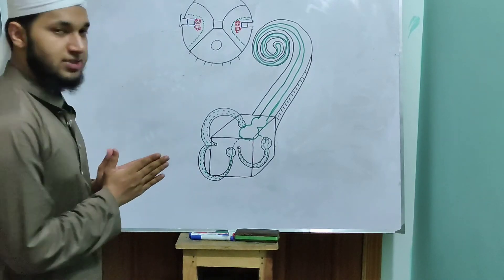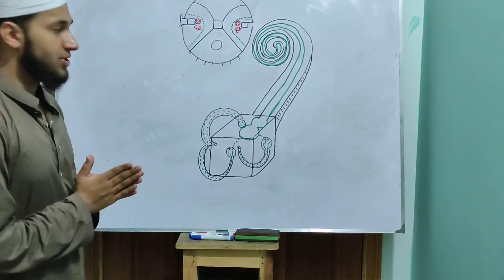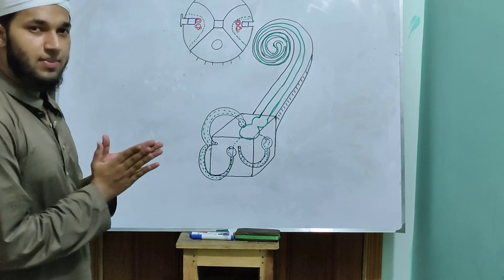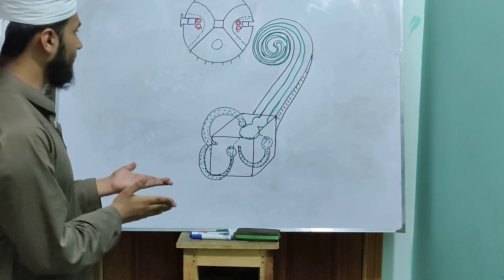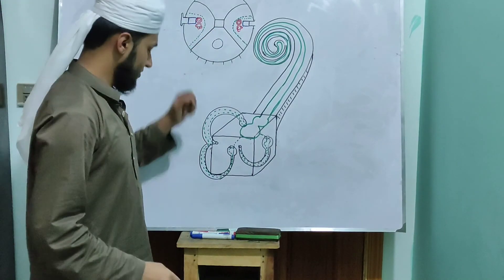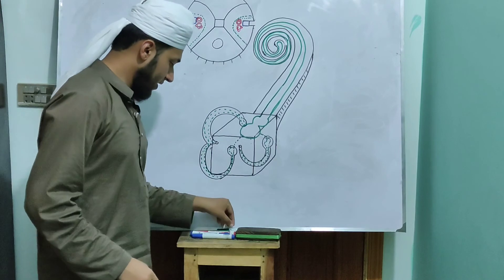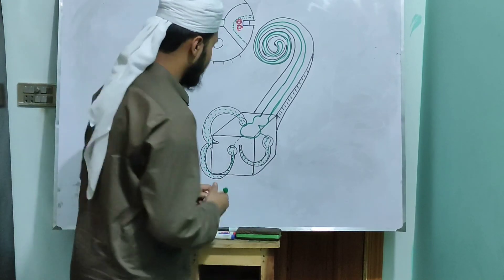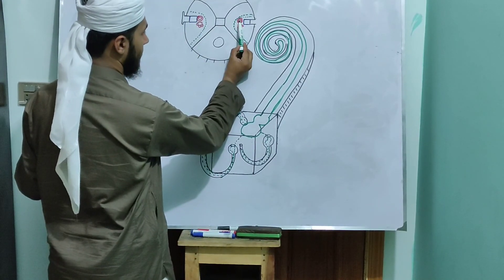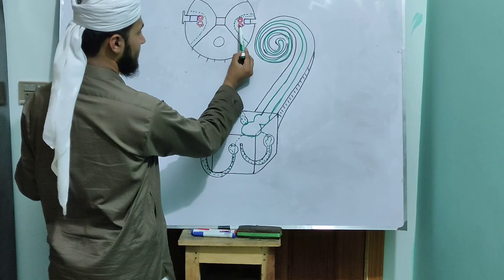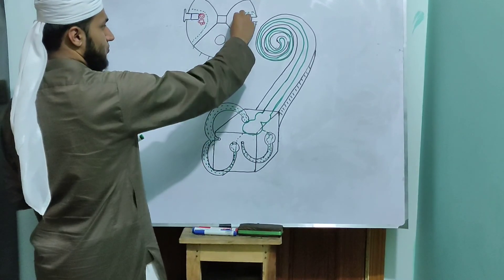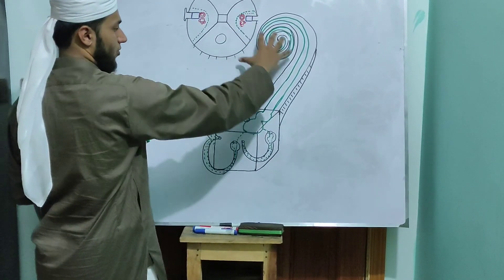After discussing the exact location of the internal ear, now we will discuss some more features about the internal ear. The internal ear has two parts: one is known as the cochlea and the other is known as the vestibular apparatus.